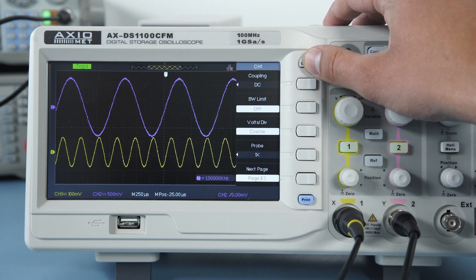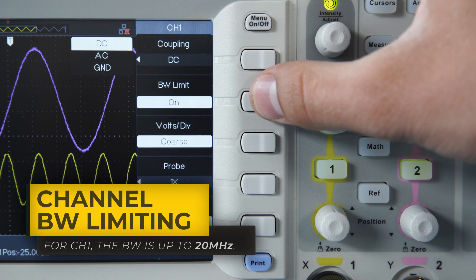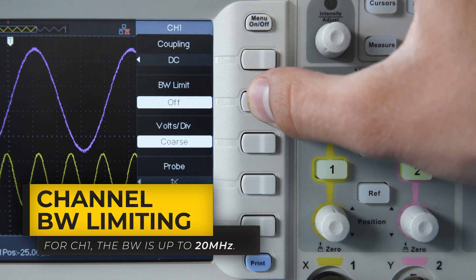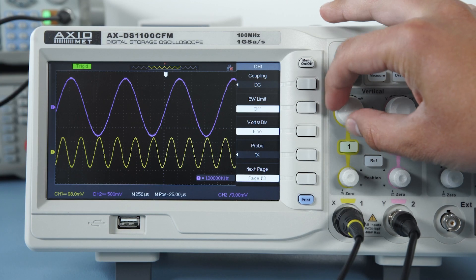The menu gives you access to channel coupling, which can be DC, AC, or ground, channel bandwidth limiting which allows noise reduction and filters unwanted high frequencies, or change the vertical scale adjustment modes between Coarse or Fine.